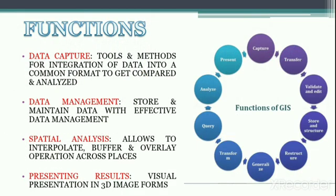Now let's look into the basic functions of GIS. There are four basic functions that GIS always provides: data capture, data management, spatial analysis, and presenting the results. There are various sources from which GIS uses data. GIS provides tools and methods for the integration of data into a format so that data can be compared and analyzed. Scanned paper maps, aerial photographs, existing digital data, GPS, and remote sensing satellite images are a few key data sources used in GIS.